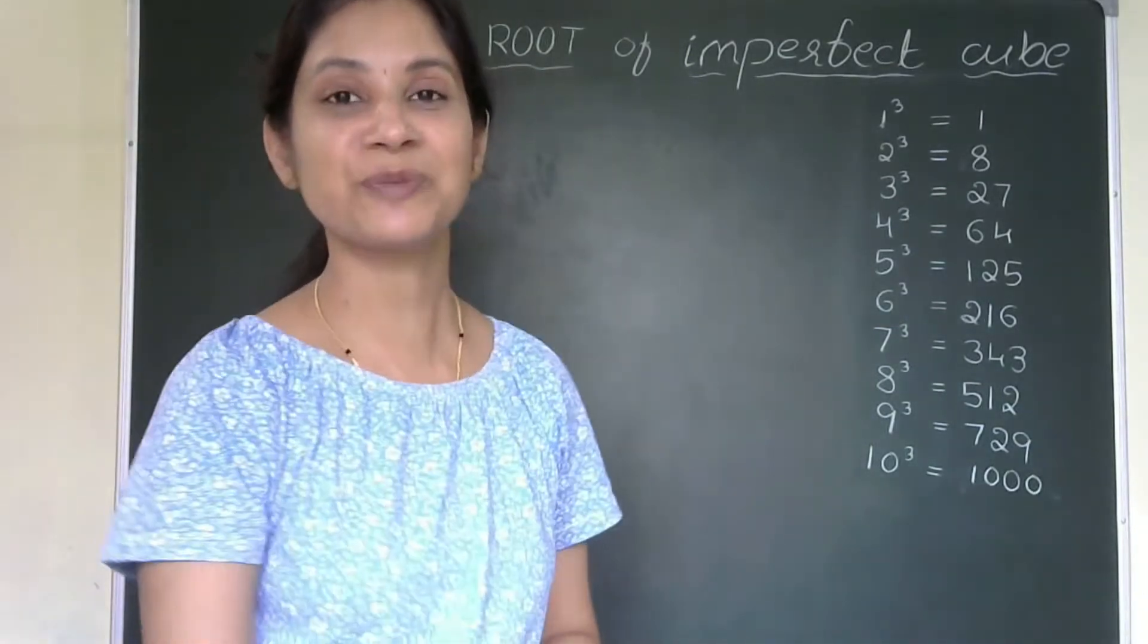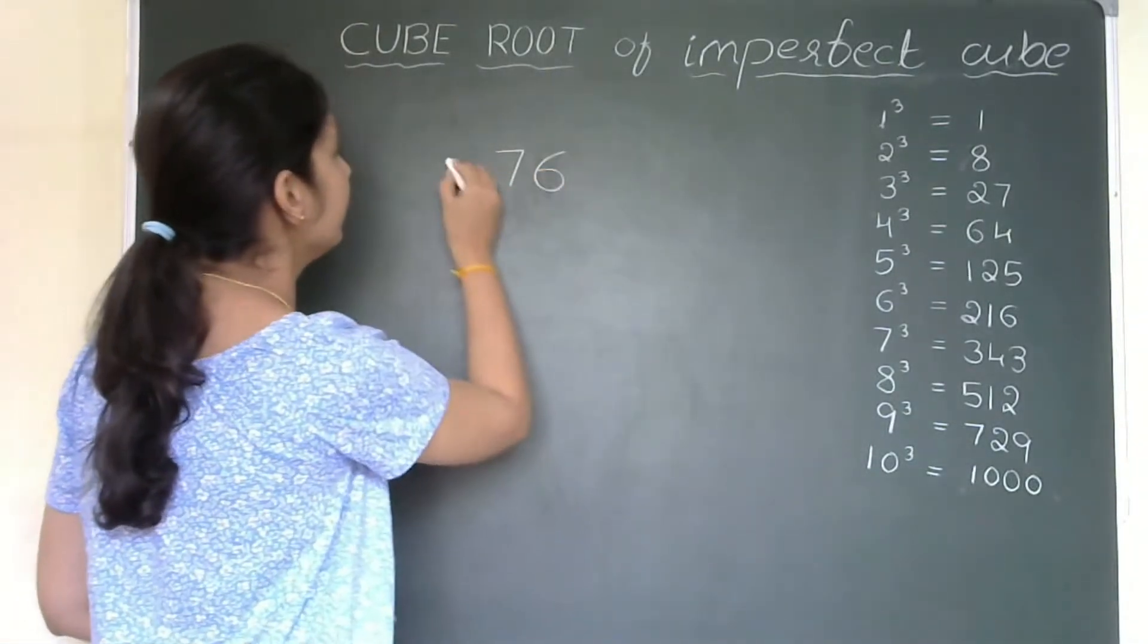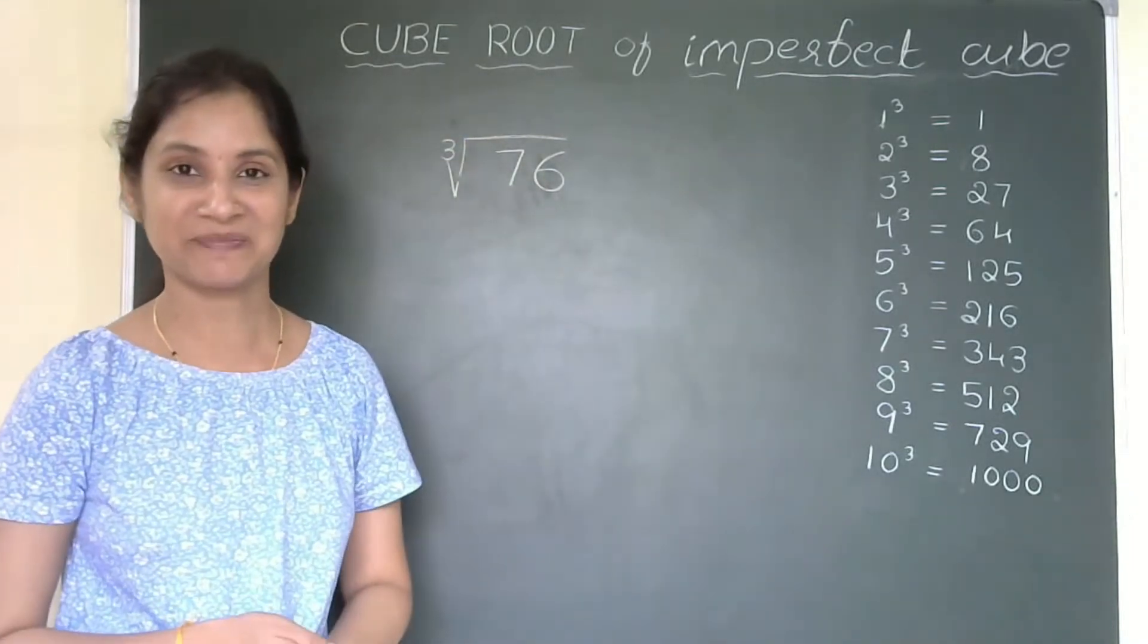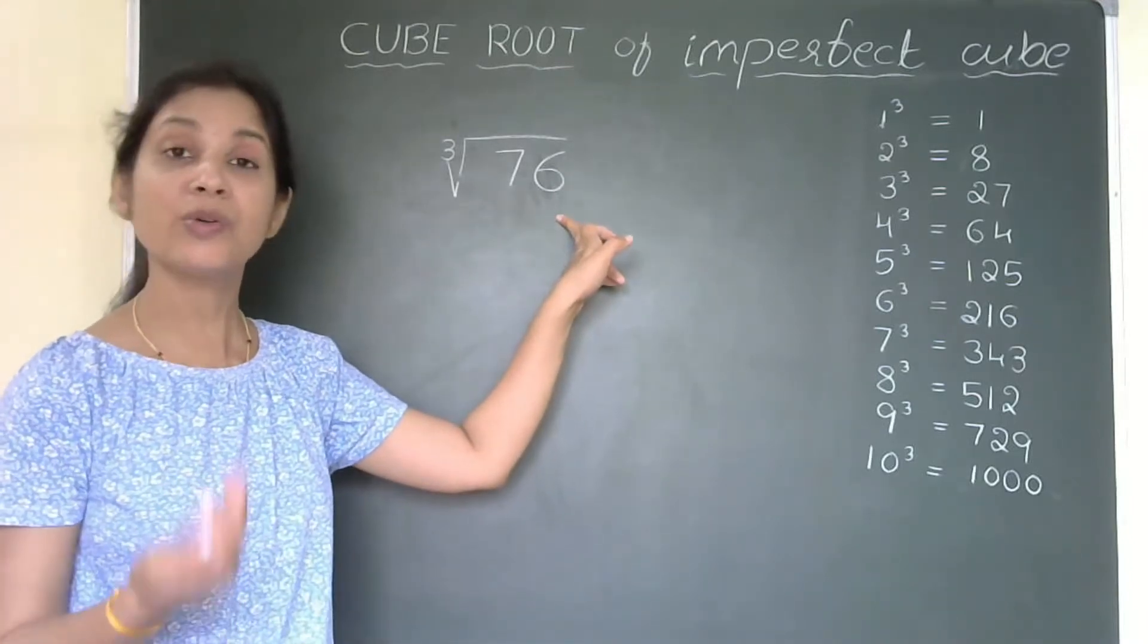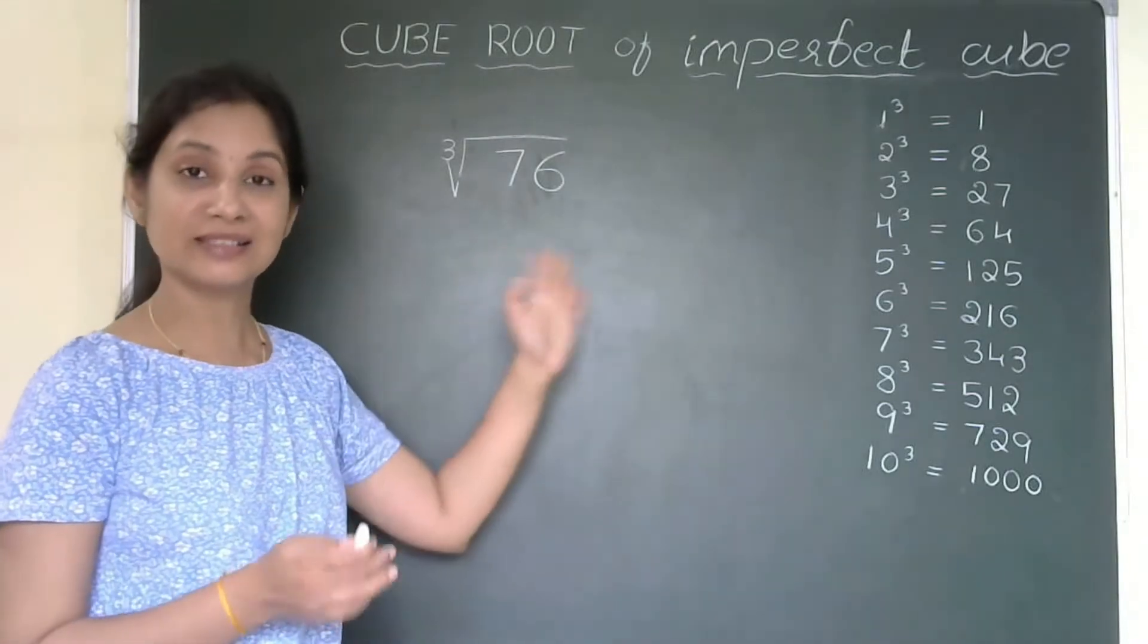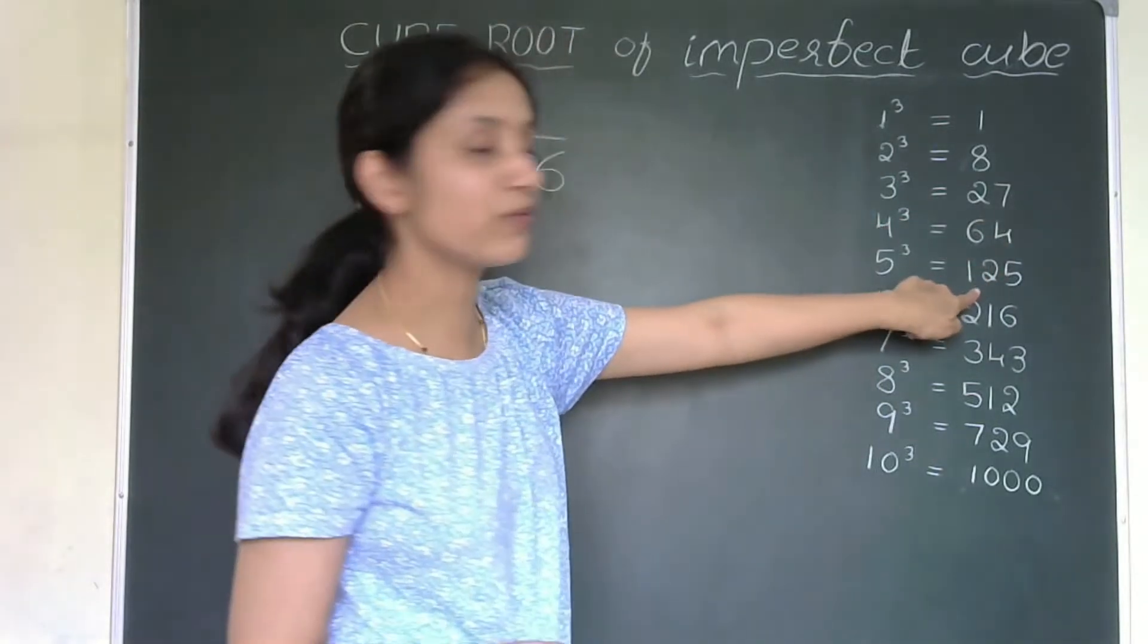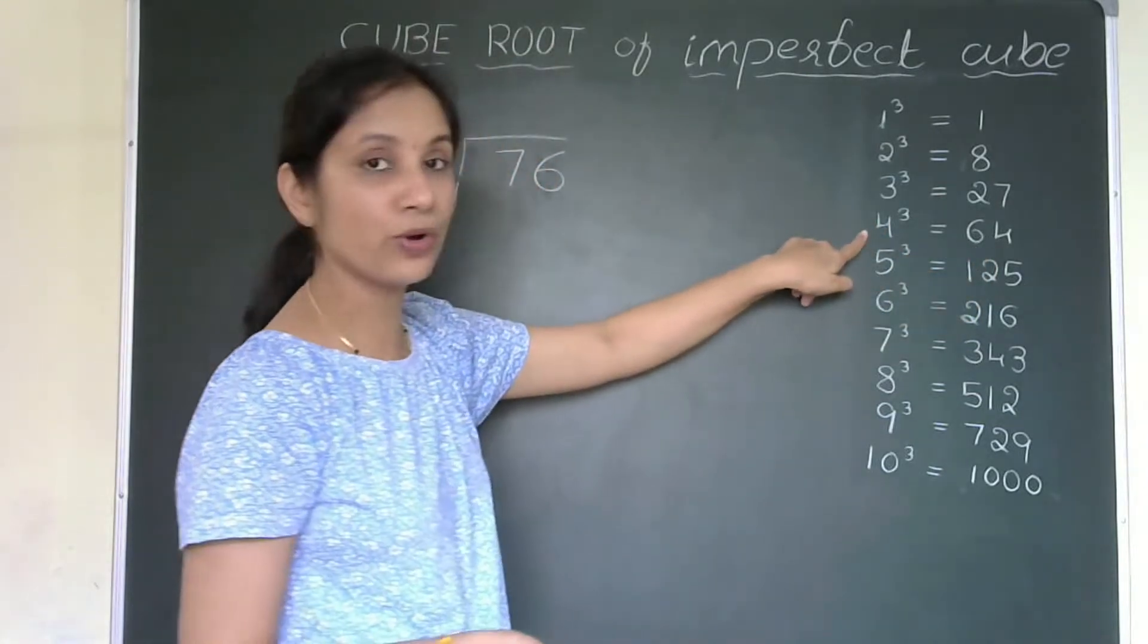Let us start with the first problem. 76 I am taking here. That means we are finding cube root of 76 which is an imperfect cube. So, what is the first step? First step is splitting the number. How do you split the number? We need to check that where 76 falls in this list. 76 is in between 64 and 125. That means it is in between the cube of 4 and 5.